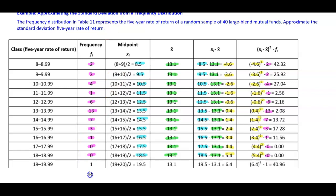The last class is 19 to 19.99, with a frequency of 1. The midpoint is 19.5 and the sample mean is 13.1. Taking 19.5 minus 13.1 gives 6.4. 6.4 squared times the frequency of 1 gives 40.96.